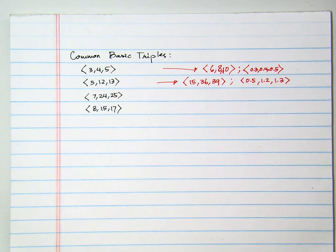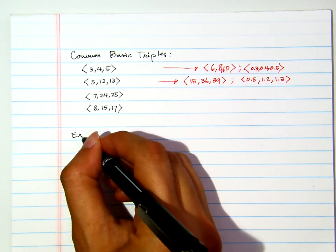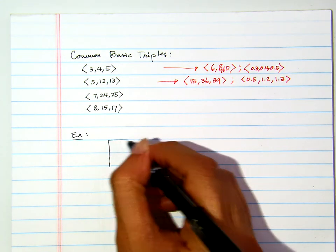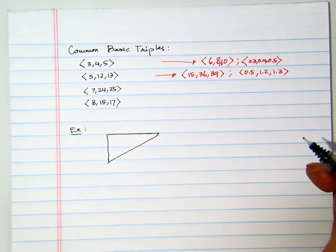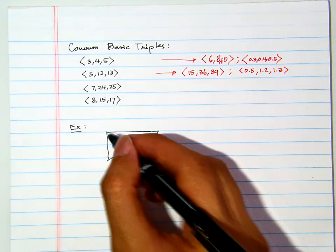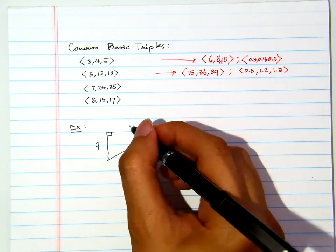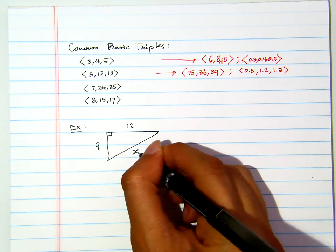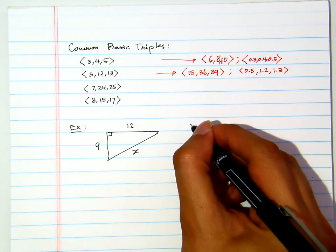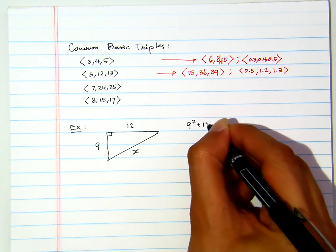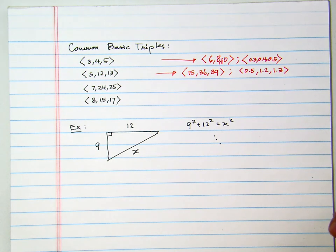So using this knowledge, suppose that I have, for example, I have this right triangle here, and it is given to us that this is a nine, and this is a twelve. Now, what is this? Of course, you can use Pythagorean theorem. To solve that, that's one way. You do nine squared plus twelve squared equals to x squared, and you'll get the answer.